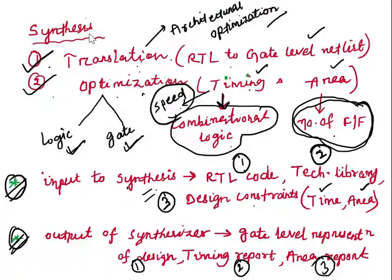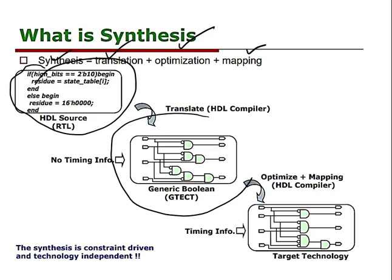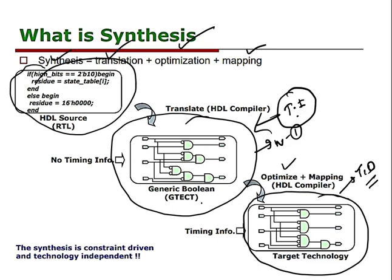Synthesis involves translation and optimization, plus technology mapping. The RTL code is translated into an RTL-level circuit using the technology-independent library — giving the first netlist. Then with technology-dependent cells, the design is optimized in terms of area, timing, and performance. This second step is technology mapping, which generates the final optimized netlist.